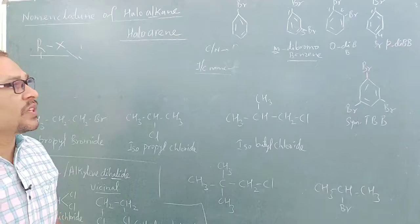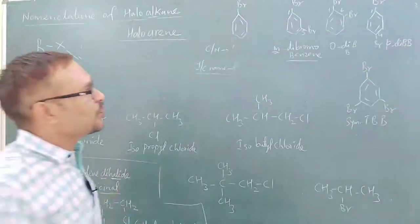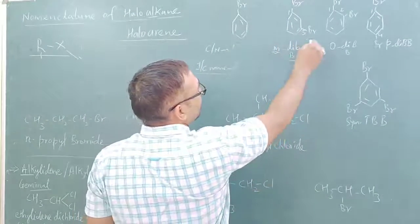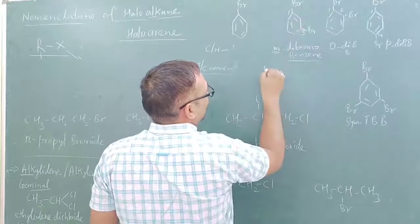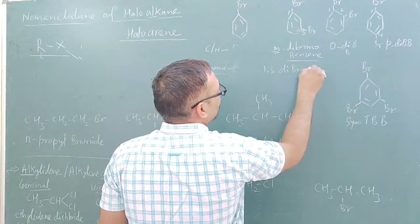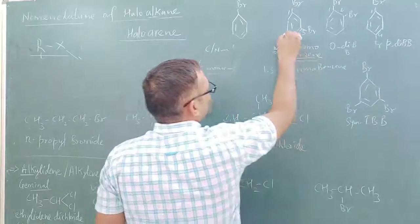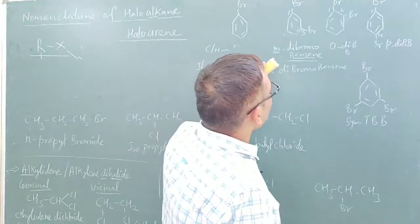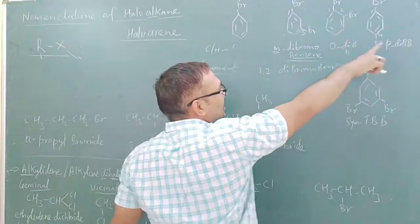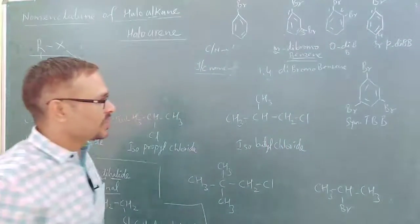So in this way, the common nomenclature takes place using ortho, meta, and para. If we talk about IUPAC nomenclature, then we write the numbering: 1,3-dibromobenzene for the meta compound. Similarly, 1,2-dibromobenzene for ortho, and 1,4-dibromobenzene for para. These are the IUPAC names.